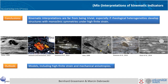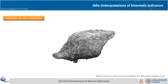So, we can conclude that the interpretation of kinematic indicators is not always trivial, especially if we have different rheologies involved and heterogeneities which create structures with monoclinic symmetries under high finite strain that are sometimes really counter-intuitive. My outlook is that we need more numeric models, especially models which can handle really high strain deformation and include mechanical anisotropy. Thank you very much for your attention.